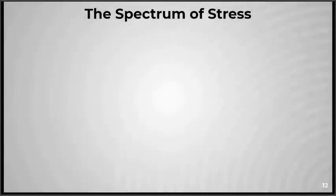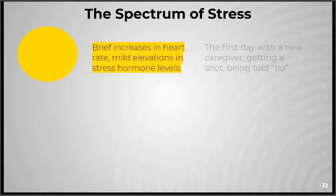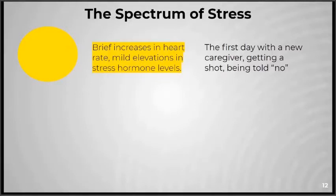There are many different types of stress. The first is brief increases in heart rate and mild elevations in stress hormone levels. This might be caused by the first day of school, getting a shot, or even being told no. This level of stress is not harmful to the child and can even help build resiliency.